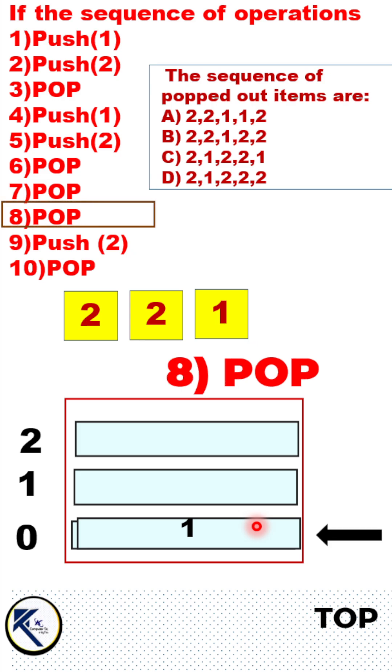Eighth operation is also pop. At this stage the stack has become empty. So if the next operation is also pop it will result in underflow.